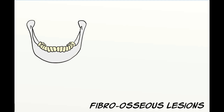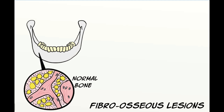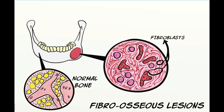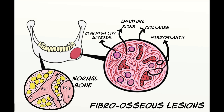Fibro-osseous lesions are those bone lesions where normal bone is replaced by numerous fibroblasts and collagen, with varying degrees of dispersed calcifications in the form of immature bone and cementum-like tissue.